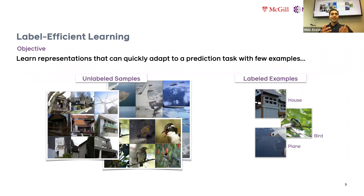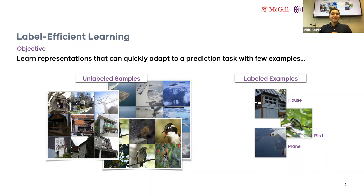We want to learn representations on unlabeled data — we have a lot of unlabeled data — and then quickly adapt to a prediction task with few examples. I think most people agree: a good representation should be able to adapt to a prediction task with very few examples. In this talk I'll focus on image classification, though this problem is broadly more interesting than just image classification and requires different levels of semantic abstraction.